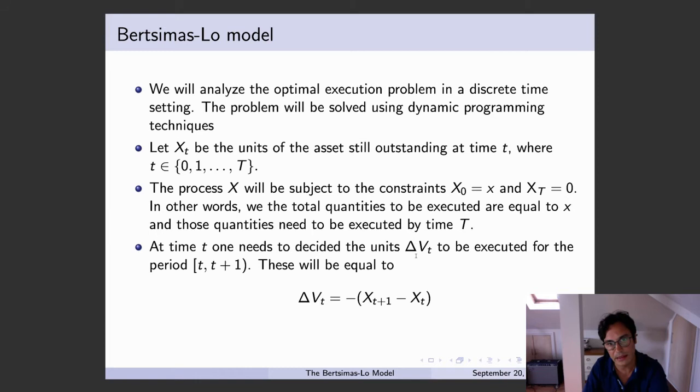For notational convenience, we are going to denote by ΔV_T, the number of units which are going to be executed at any point in time. So we start at time zero and we actually finish at time T, capital T minus one.